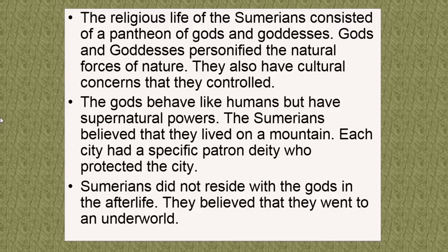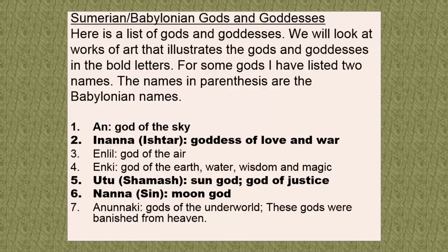The Sumerian gods act just like humans but have supernatural powers, and the Sumerians think they all live together on a mountain. Each city-state had its own patron deity, but they all shared a common set of gods living on the same mountain. The Sumerians didn't think they would go live with the gods in the afterlife — they thought they just went underground and lived there. Here's a list of the gods and goddesses; I don't need to read them all out. The ones in bold are the ones we're going to look at that are actually illustrated in different works of art. You can go online and find all kinds of things and images about these — this is a survey class, so we can only look at a little tiny bit of each subject.